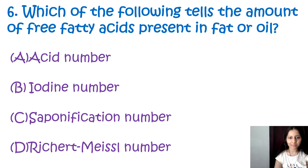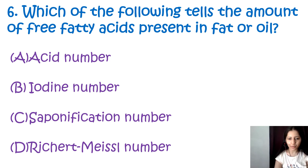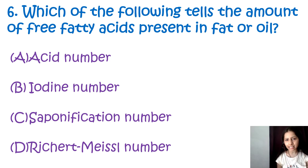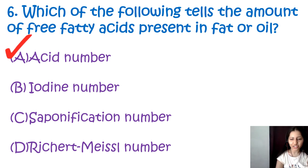Question number 6: Which of the following tells the amount of free fatty acid present in fats or oils? Options are acid number, iodine number, saponification number, and Reichert-Meissl number. The amount of free fatty acid present in fat or oil is indicated by the acid number. So the correct option is A, acid number.